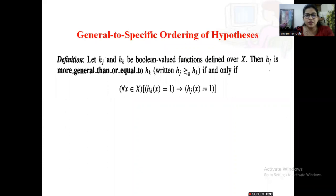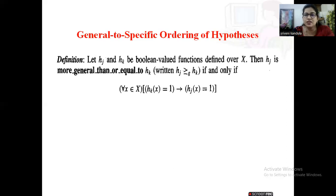So if you see the formal definition of this: let hj and hk be two Boolean-valued functions defined over X. These are the two hypotheses defined on the instance space X. Then hj is more general than or equal to hk — written as hj ≥ hk — if and only if for all instances of x, whenever hk(x) equals one, meaning the instance is classified as positive, hj(x) is also one, meaning hj classifies it as positive as well.